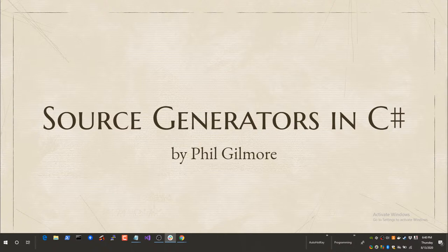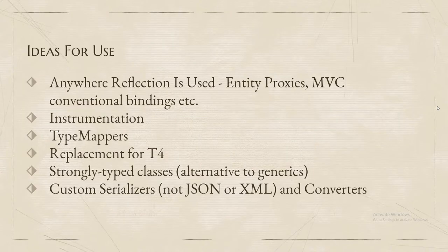I'll go ahead and get started. Source generators — I have a few examples that are working and a few that are not, and we'll just see how far we can get. Source generators are new in .NET 5, and we covered some .NET 5 features last month. It had quite a few interesting features, but I think this was the most interesting one. It may get the juices flowing to think about what we can do with them, because they're an interesting sort of tool.